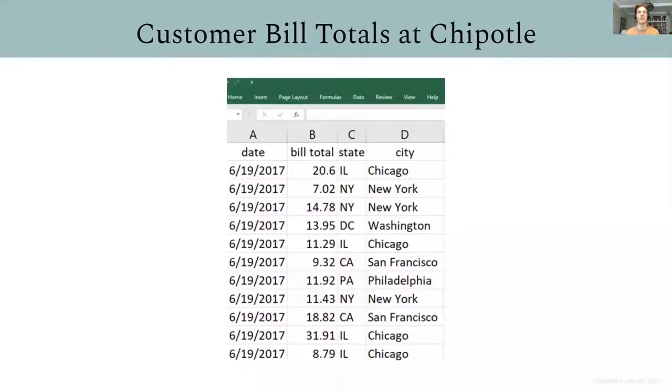Our data source for this work is data vendor Second Measure. And here we see transactions in the case of Chipotle, and we observe the individual bill totals of customers. Maybe our data contains your bill total if you went to Chipotle in the last couple of years. Then the question is, is it possible to tell what you bought, not just how much money you spent in total? That is, could we infer which products are selling?